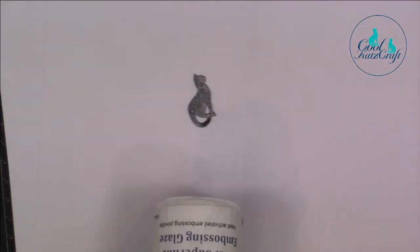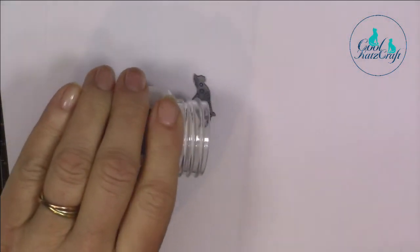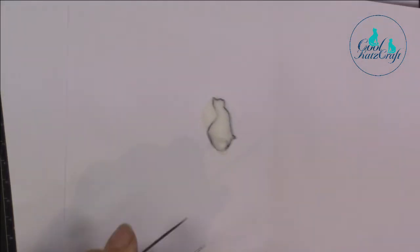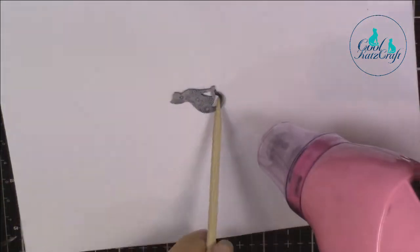I'm now going to put embossing powder onto my silver cat. This time I'm using clear embossing powder so that I can see the stamped pattern. It's exactly the same process as with the black enamel, but this time in clear.